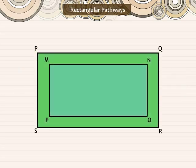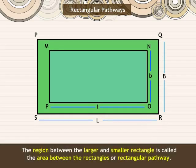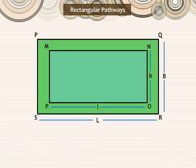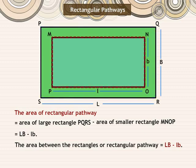Let us observe this figure. The figure has two rectangles. The larger rectangle PQRS has length capital L units and breadth capital B units, and the smaller rectangle MNOP has length small l units and breadth small b units. The region between the larger and smaller rectangle is called the area between the rectangles or rectangular pathway. The area between the rectangles is equal to the difference between the area of the larger and smaller rectangles.